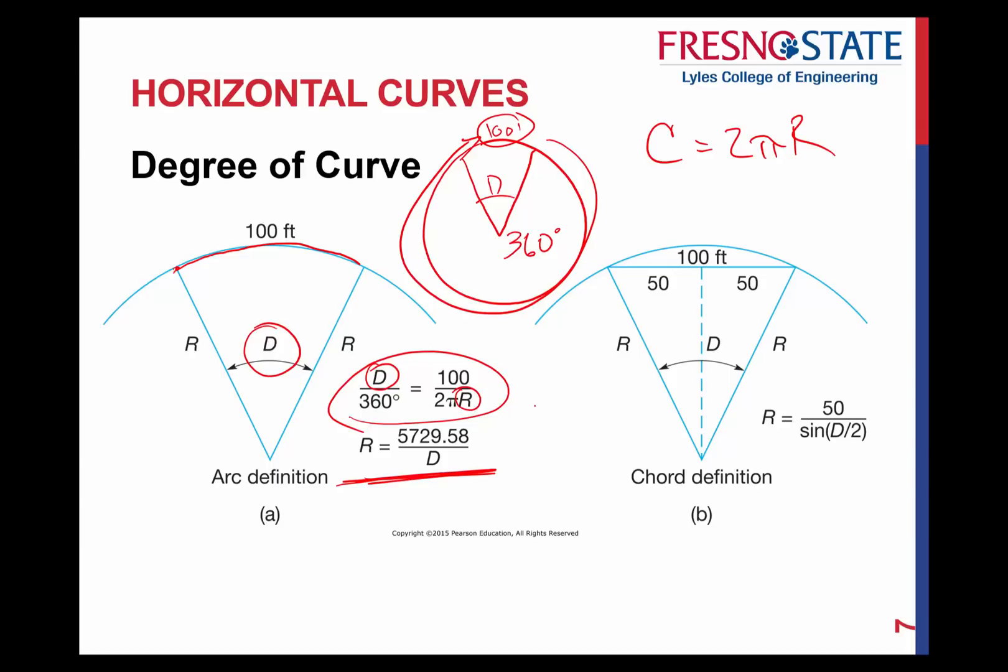This will be your general formula to solve for radius, and this is just reducing these equations here. You get 5729.58 over D. Now when we do these calculations, make sure you take them just as is. We're not converting D into radians or anything like that. D is going to be used as degrees. In this instance right here, you'll have to calculate this into decimal degrees to be able to do that. And then you end up right there with the radius.